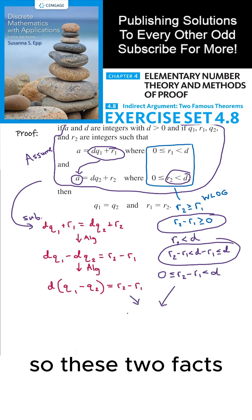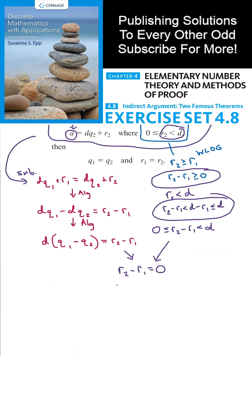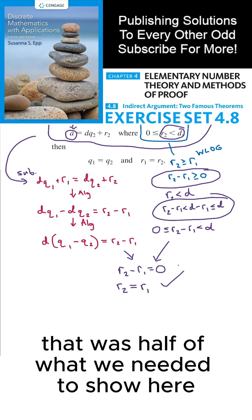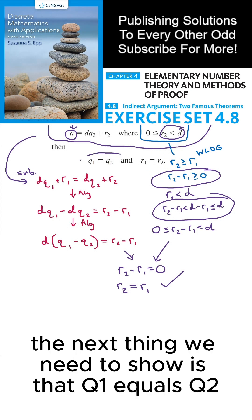So these two facts mean that R2 minus R1 equals zero. And if we add R1 to both sides, we get that R2 equals R1. That was half of what we needed to show here, that R1 equals R2. The next thing we need to show is that Q1 equals Q2.